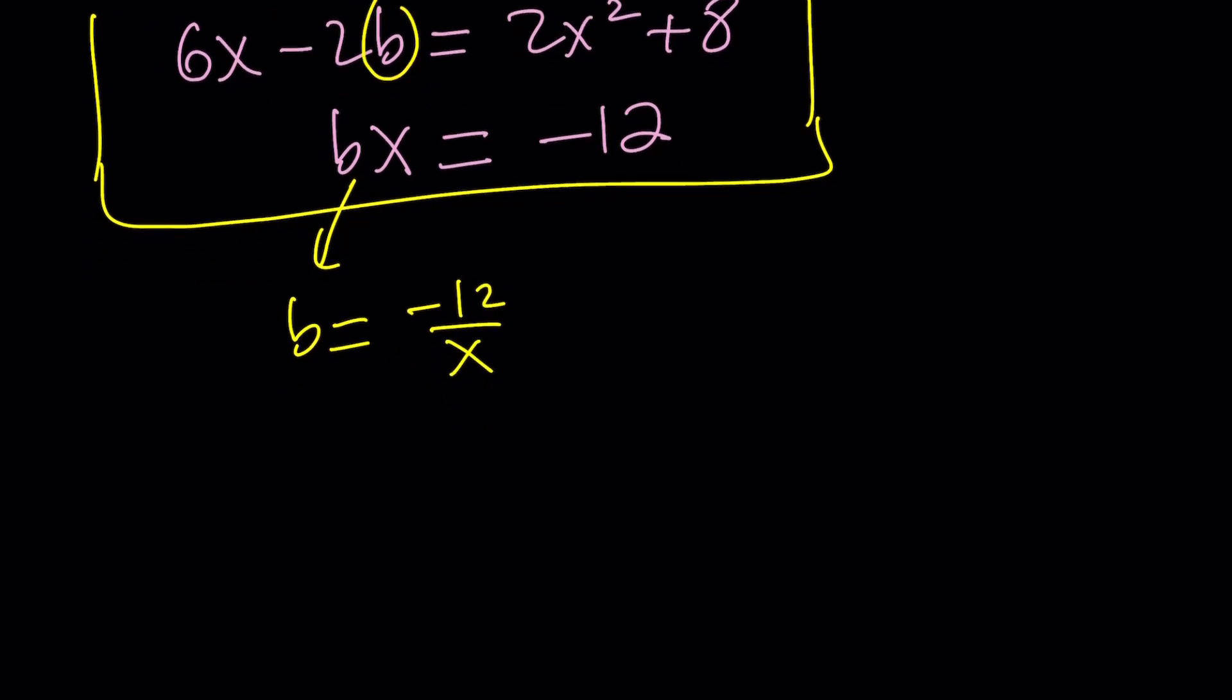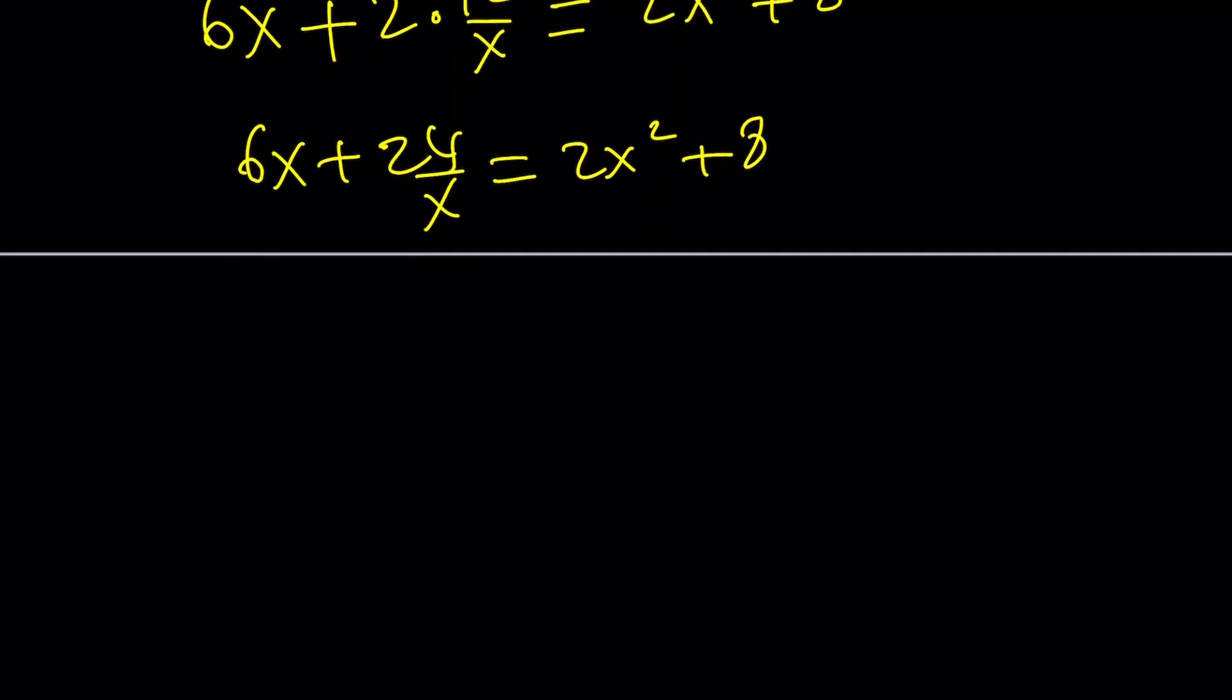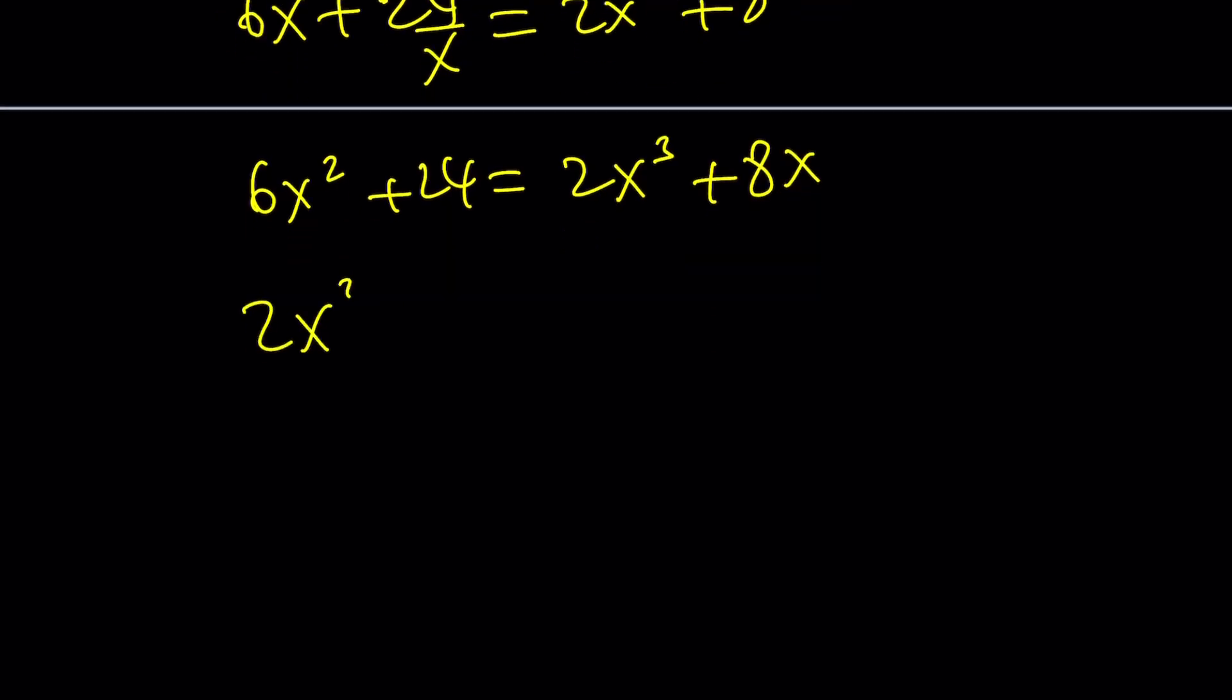And now we're going to plug it in. 6x minus 2b, which is 2 times 12 over x, equals 2x squared plus 8. From here we get 6x plus 24 over x equals 2x squared plus 8. Multiply both sides by x. 6x squared plus 24 equals 2x cubed plus 8x. Let's put everything on the same side.